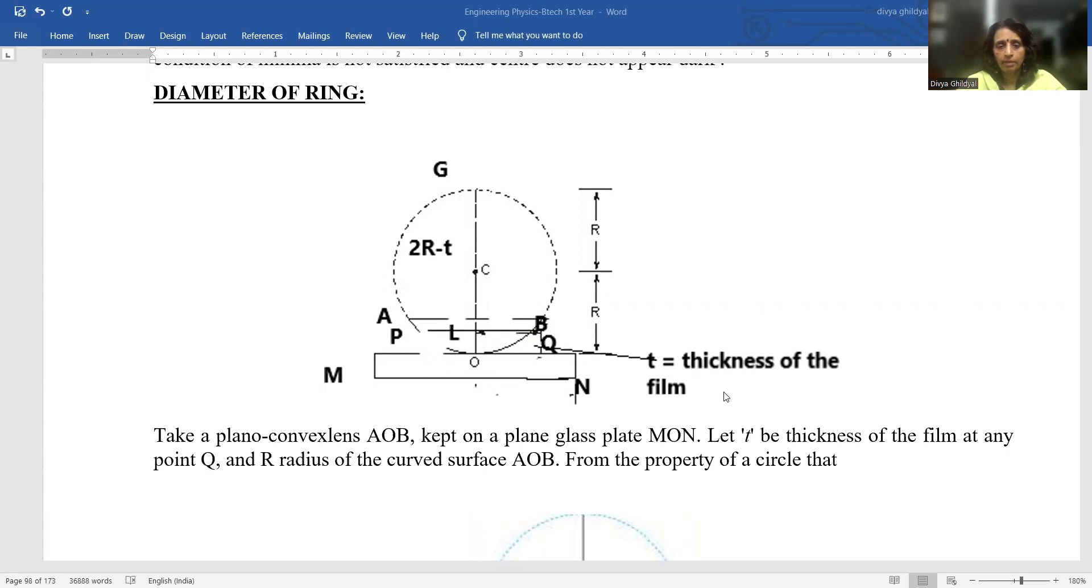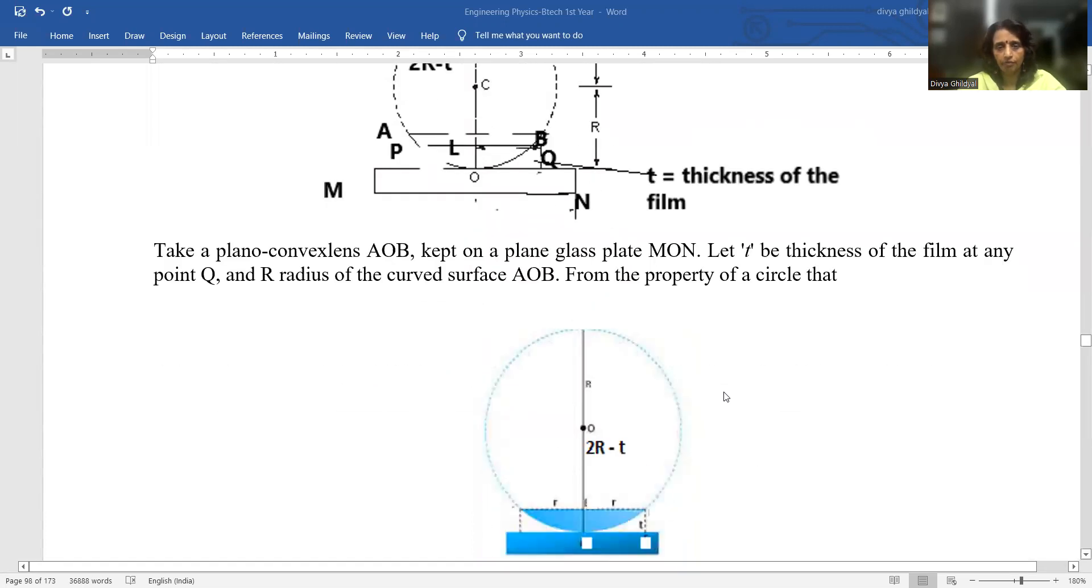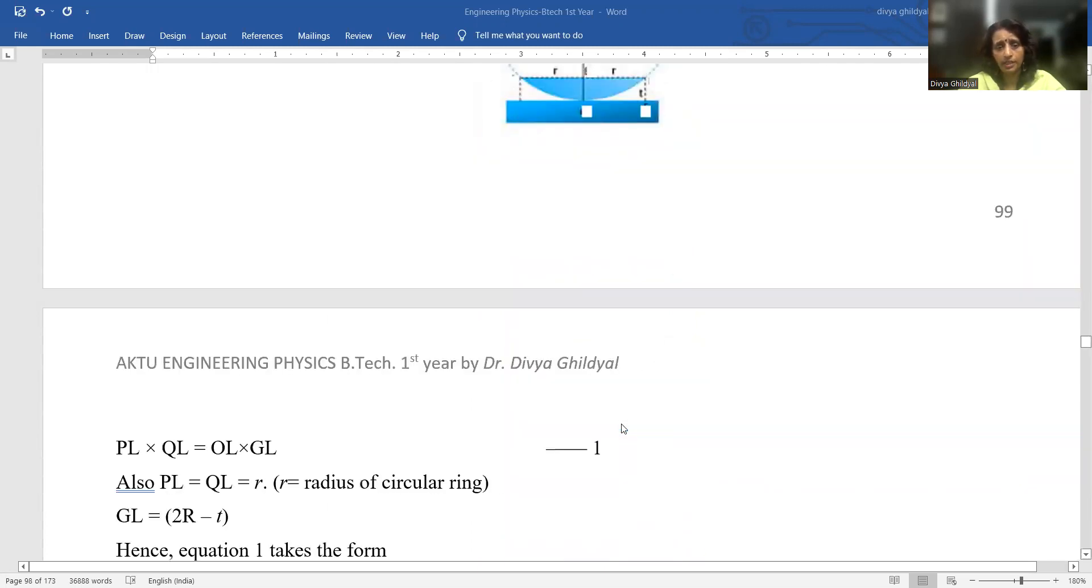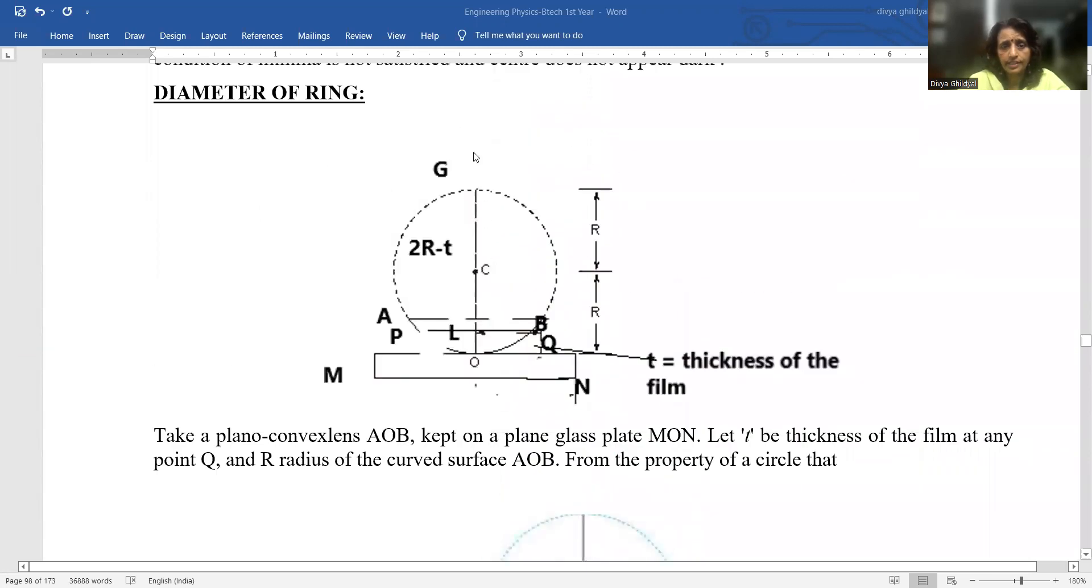Before we start that, remember two, three mathematical properties for the same. First, as per mathematical property, if this is the circle of my Newton ring that has been formed in my experiment,